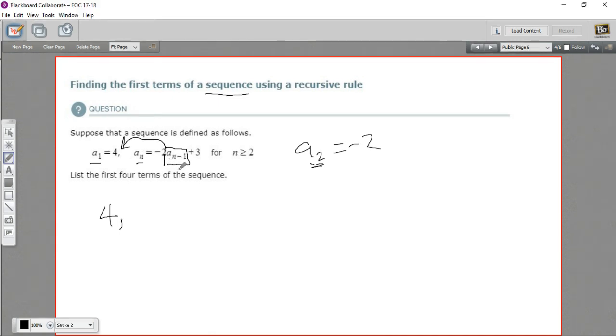So when you see this a sub n minus 1, that just means the term in the sequence right before this one. And in our case, that's 4. And then we just have a plus 3 after that. So once you know that, this just comes down to some arithmetic. Negative 2 times 4 is negative 8 plus 3, so this equals negative 5. And that's our second element.